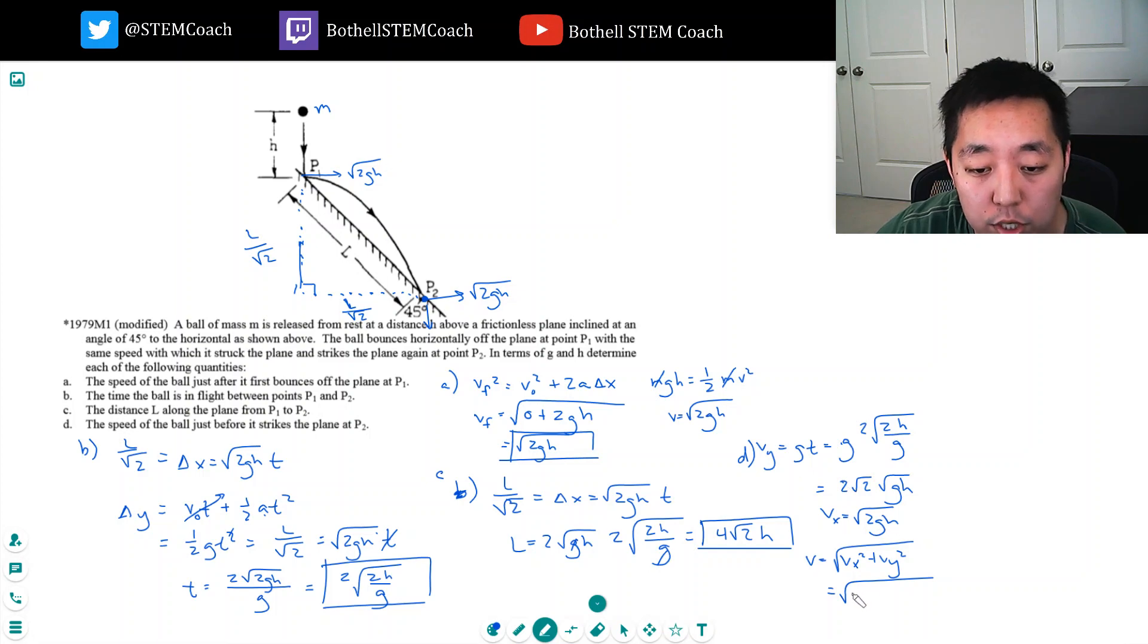Square root of v_x squared is 2gh, v_y squared is 4 times, it's this one, this is 4 times 2gh. That's 2gh plus 8gh, which equals square root of 10gh. Okay.